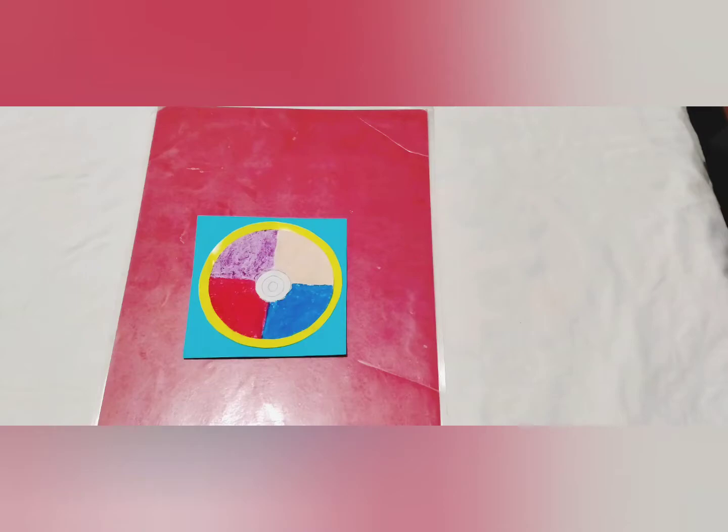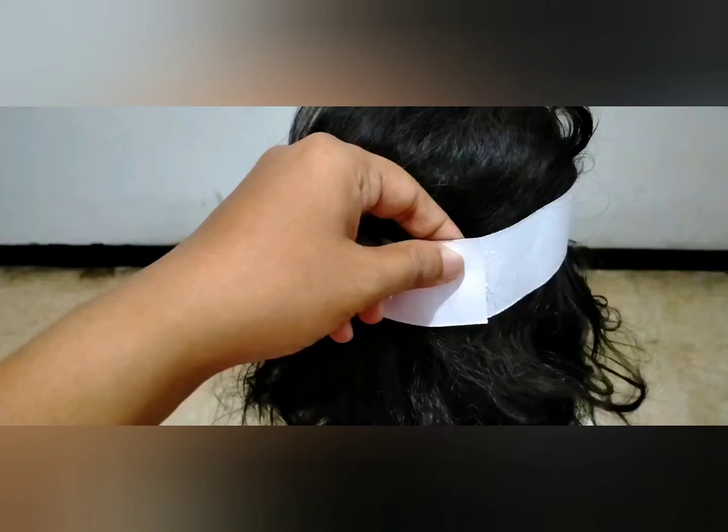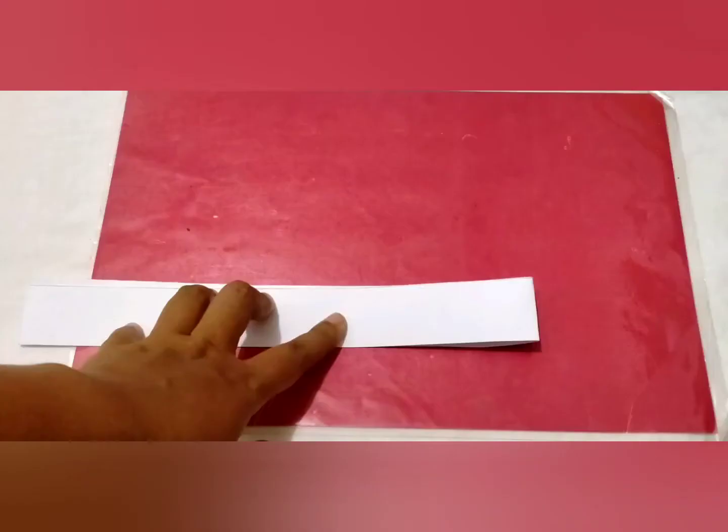To make a headband, you take another paper and cut it into a very long rectangle like this. Then, you try to check how big your head is by putting this around your head. After you finish checking whether it is enough for your head, now please fold it into two.